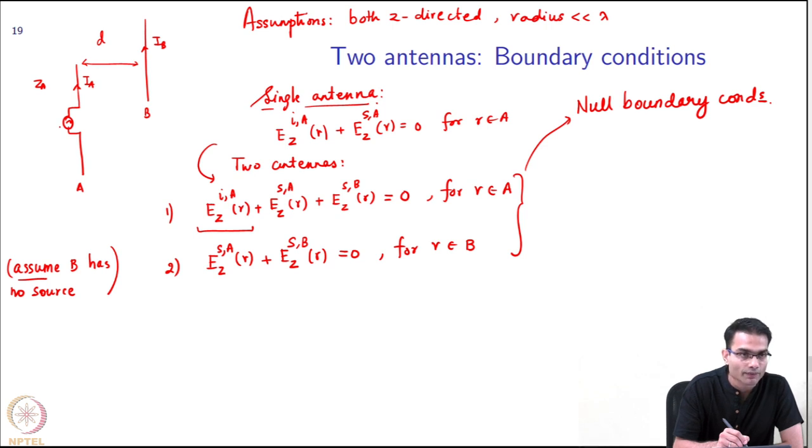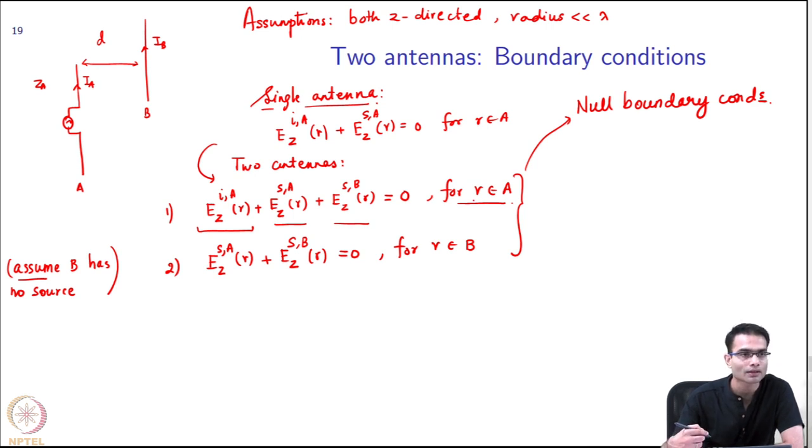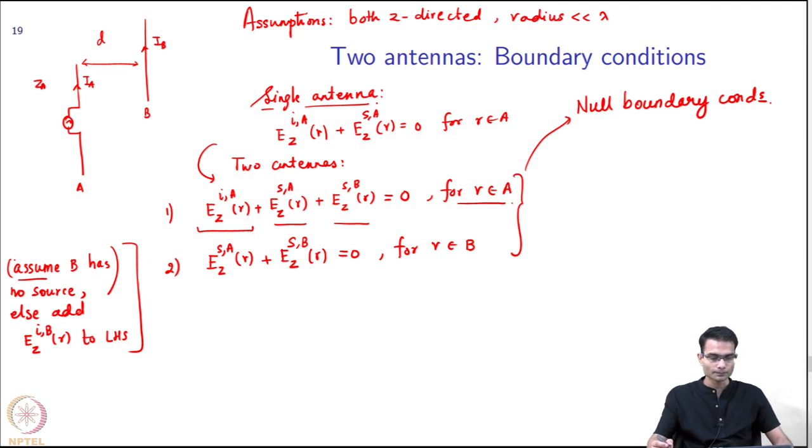I have some voltage source in A which is generating a field, and that is the first term. The second term is the field due to the current flowing in the antenna itself, and the second term is the field due to the current in antenna B. Now, and this is true for any point on the antenna A. When I move to antenna B the same logic holds. If there were a source in antenna B, then I have to add the source term, that is all. Is it clear? Let me write it here: else add E_z^(i,B)(R) to LHS, so that there is no confusion.